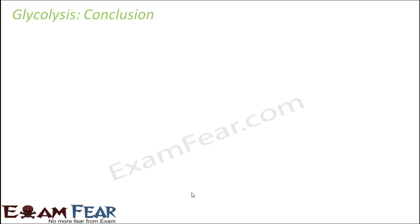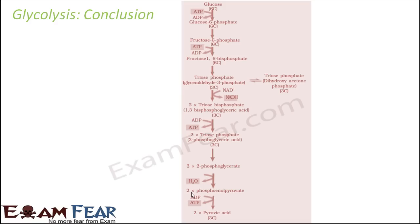Now we will have an overall conclusion on glycolysis — how much energy has been produced as a result of this process. Let us quickly look at all 10 steps at a glance. Starting from glucose to glucose-6-phosphate, where ATP was utilized, then to fructose-6-phosphate, then fructose-1,6-diphosphate, and then two products were formed which were isomers of each other.